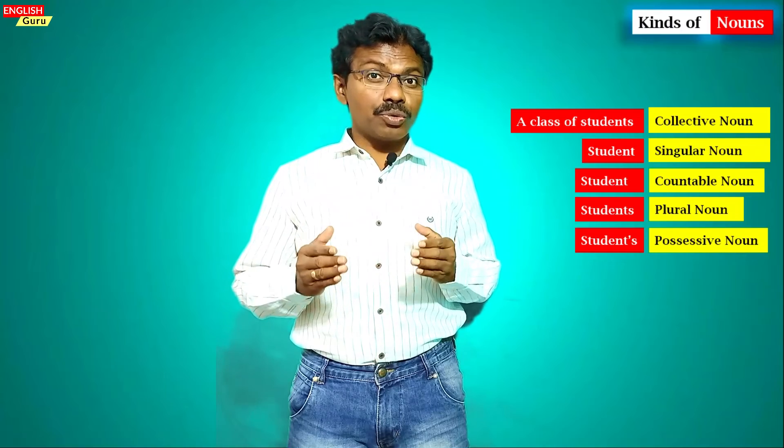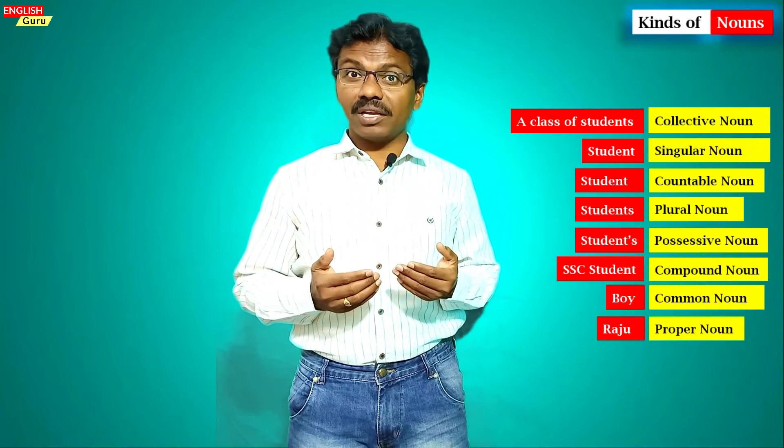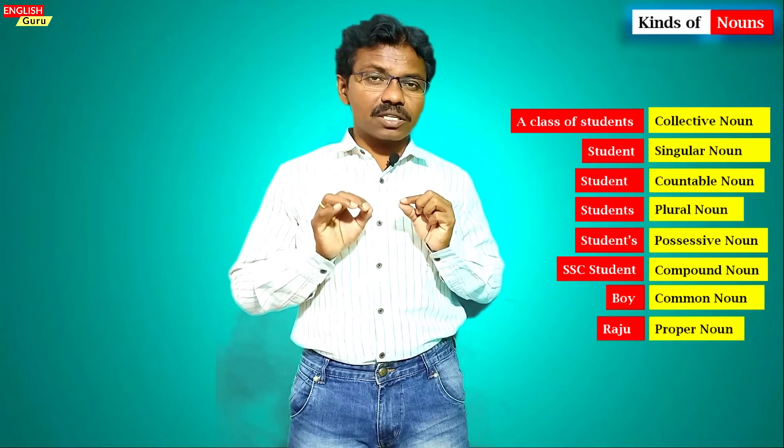We have learned the kinds of nouns in this video. We must be careful to identify what kind of noun a word is. 'A class of students' is a collective noun. 'Student' is a singular and countable noun. 'Students' is a plural noun. 'Student's' is a possessive noun. 'SSC student' is a compound noun. 'Boy' is a common noun, and 'Ravi' is a proper noun.